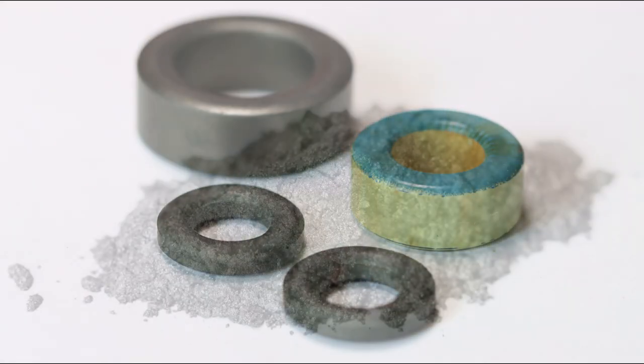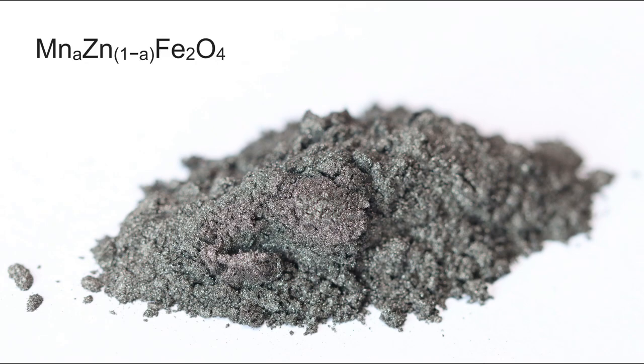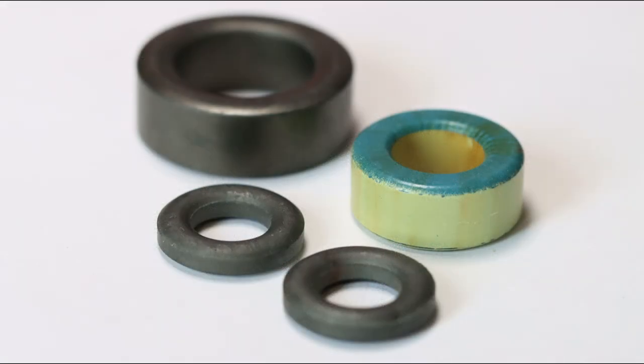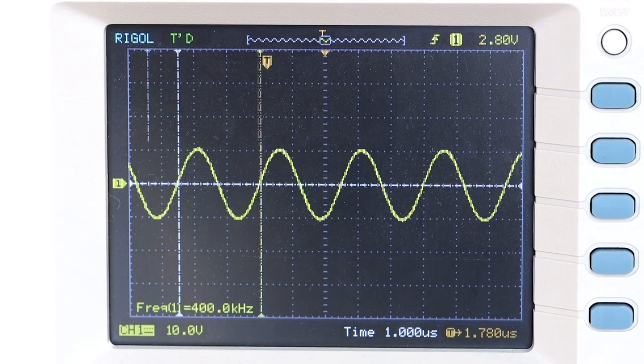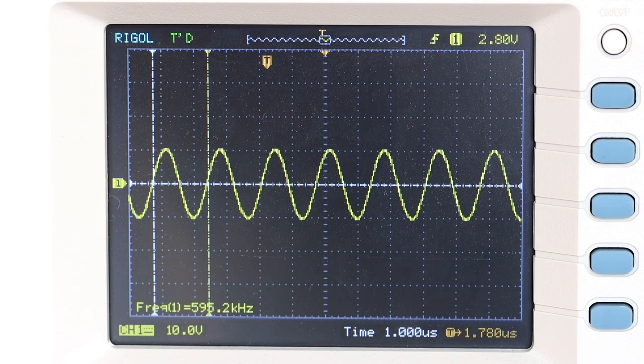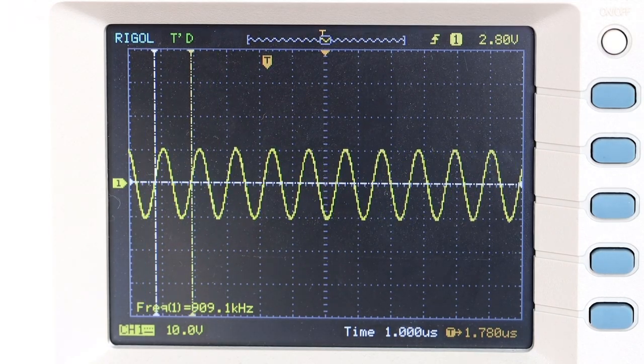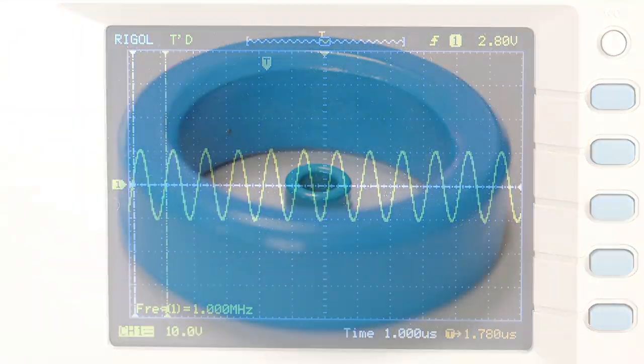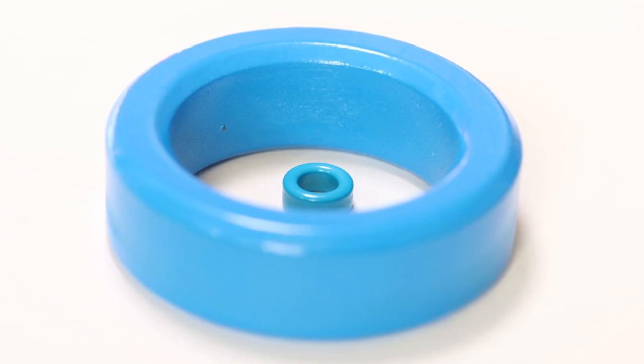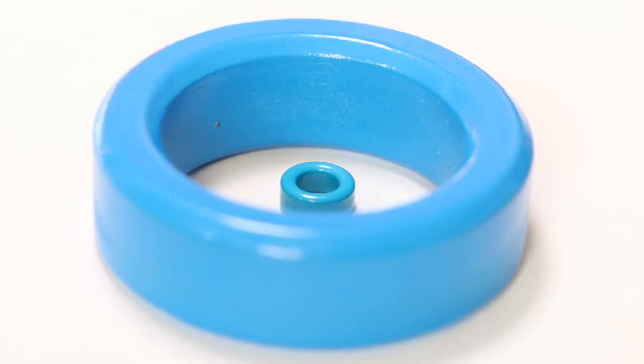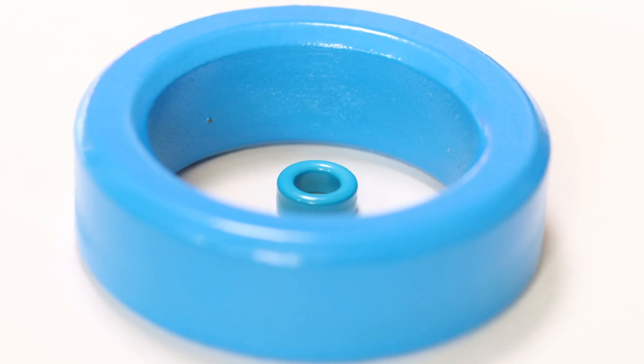Ferrite cores consist of different materials, for example manganese zinc and nickel zinc powder. Depending on the used material, the cores are designed for different frequencies. So it's very important to know on which frequency the planned SSTC or DRSSTC should work. But also the size of the core is important. The smaller the core, the faster it will saturate. So choose a properly sized core.